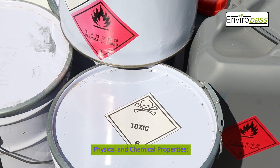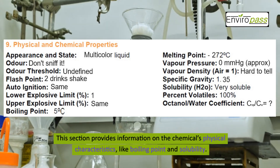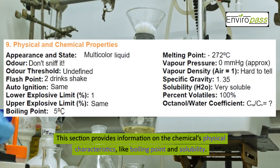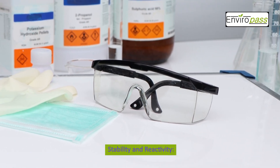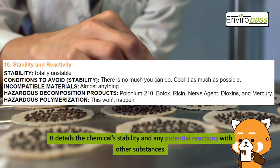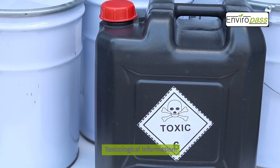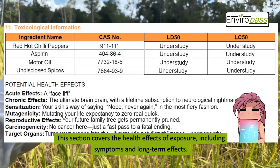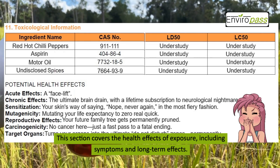Section 9, Physical and Chemical Properties, provides information on the chemical's physical characteristics like boiling point and solubility. Section 10, Stability and Reactivity, details the chemical's stability and any potential reactions with other substances. Section 11, Toxicological Information, covers the health effects of exposure, including symptoms and long-term effects.